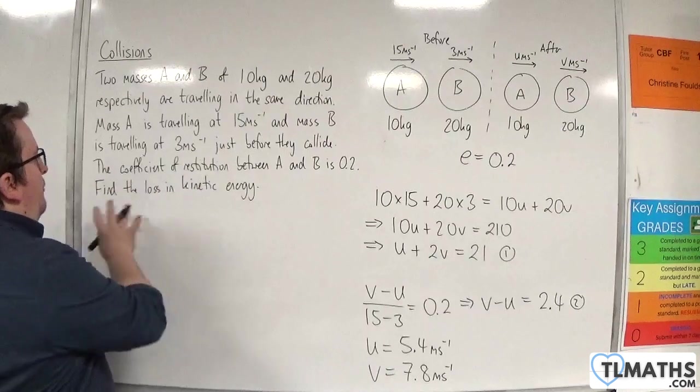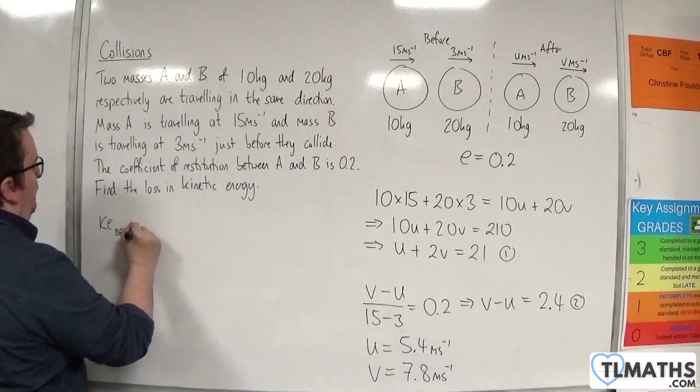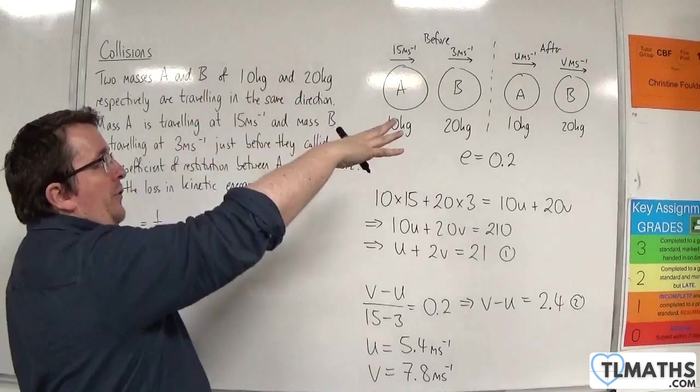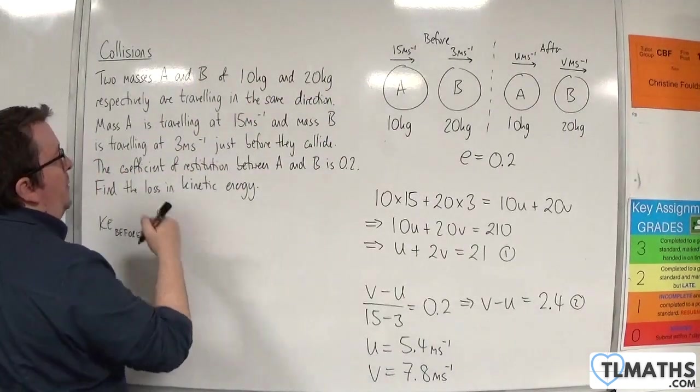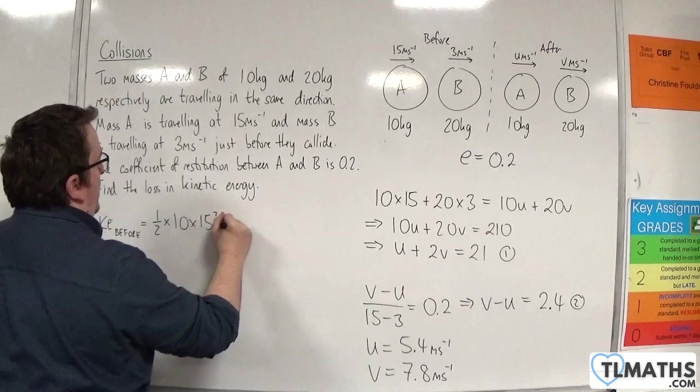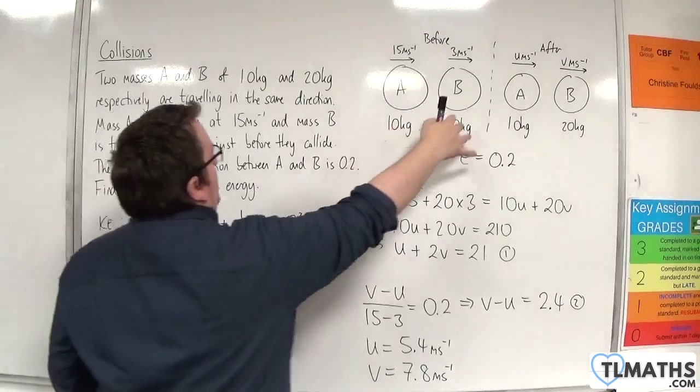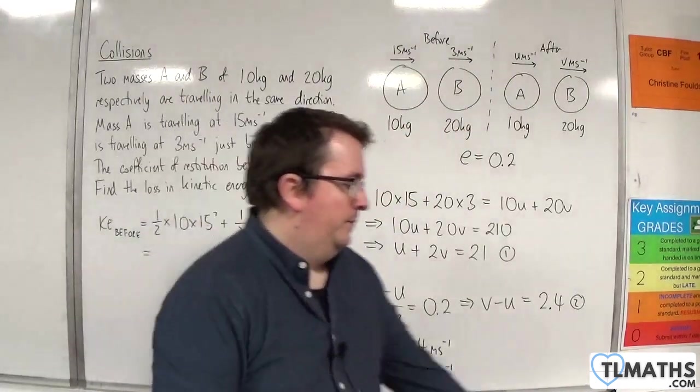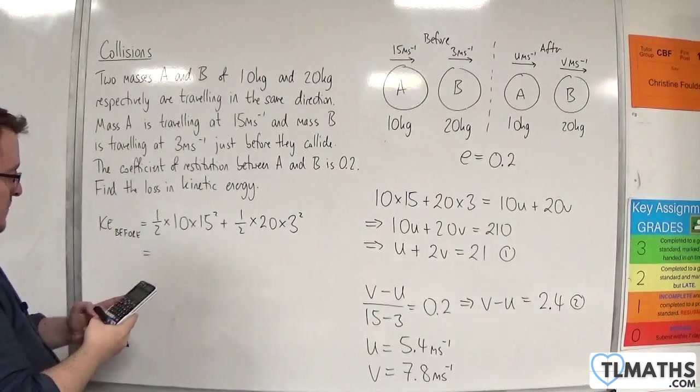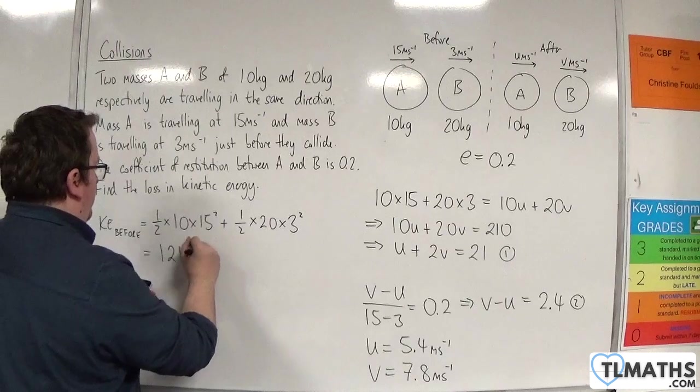Right, so now find the loss in kinetic energy. Now the kinetic energy from before the collision will be the sum of the kinetic energy for particle A plus the sum of the kinetic energy for B. So 0.5 times M times V squared, so 0.5 times 10 times 15 squared, plus 0.5 times 20 times 3 squared. And that's 1,215 joules.